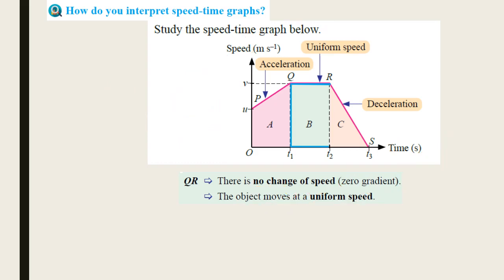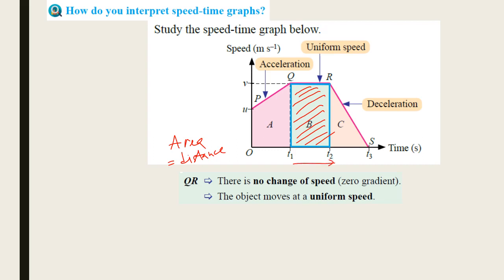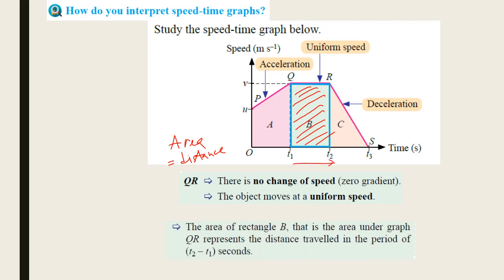Looking at the area under the graph for QR, you can see it forms a rectangle. If you find that area, it gives you the distance traveled from time t1 to t2. So the area of the rectangle under the graph for QR represents the distance traveled in the period of t2 minus t1 seconds.